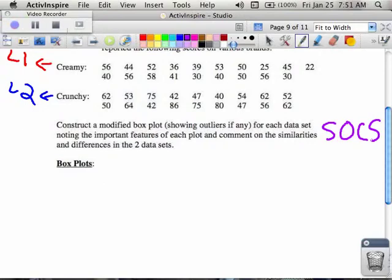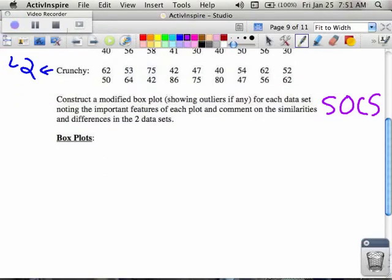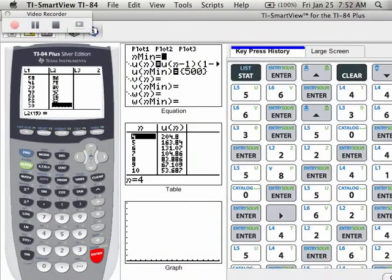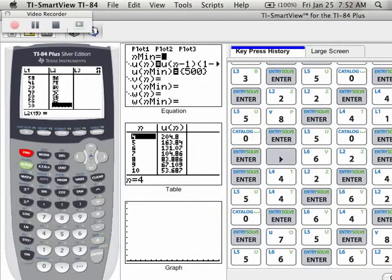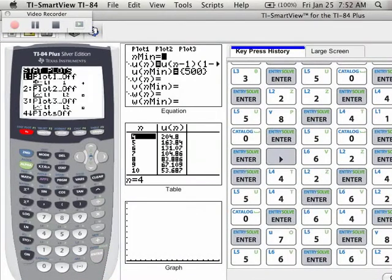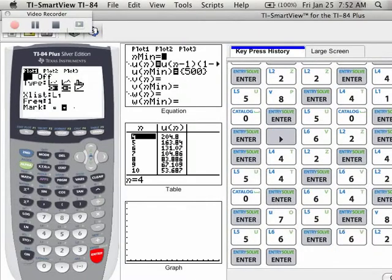So as you're constructing these plots, after you've entered them in your list, list one and list two, in your calculator, what you can do is you can go into second, Y equals, and you can turn on your plots by hitting enter twice.